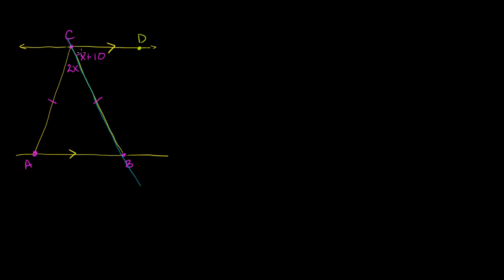You have x plus 10 right over here, and its corresponding angle is right down here — this would also be x plus 10. And if this is x plus 10, then you have a vertical angle right over here that would also be x plus 10. Or you could say alternate interior angles are congruent. Either way, this base angle is going to be x plus 10.